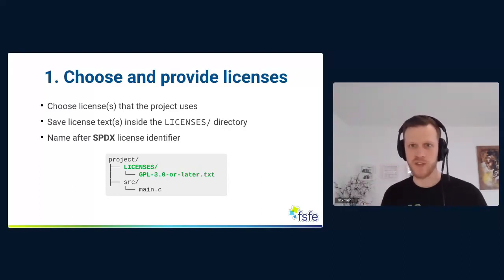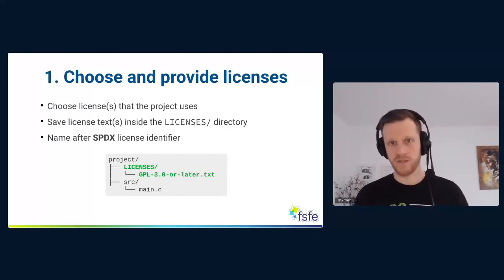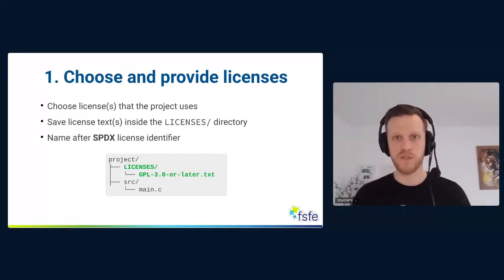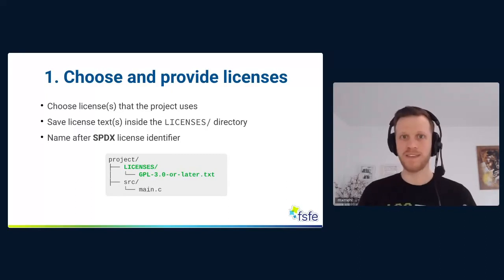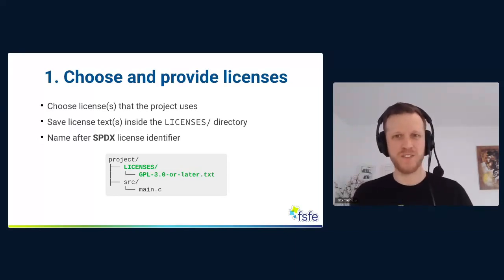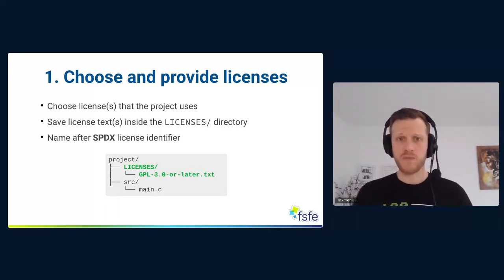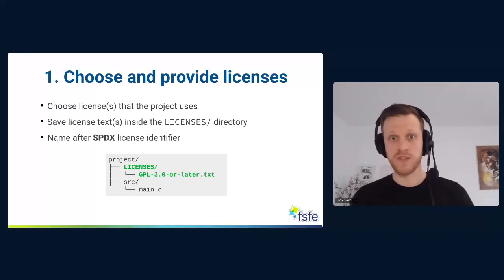Our solution is to provide the licenses directory where every license text file is stored, named after their SPDX license identifier. SPDX is nowadays a project by the Linux Foundation, and they started with something really simple: providing a unique identifier for every free software license, because there are many different variants of the GPL license — GPL 2, GPL 3, GPL 2-only, GPL 2-or-later, with or without exceptions. This created so much confusion. SPDX provides unique identifiers for every license out there. In this example, we choose GPL-3.0-or-later and store the license text in the licenses directory.